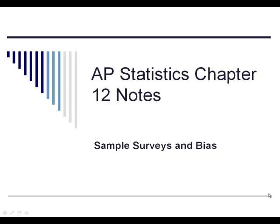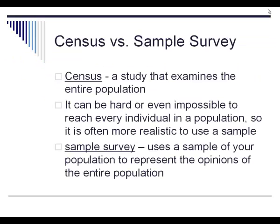Chapter 12 is about conducting sample surveys and different types of bias. There are six different types of bias we're going to look at and four different ways to conduct a sample correctly. This is mainly a vocabulary type of chapter — no math computation, just learning the vocabulary and learning to recognize it in a situation.